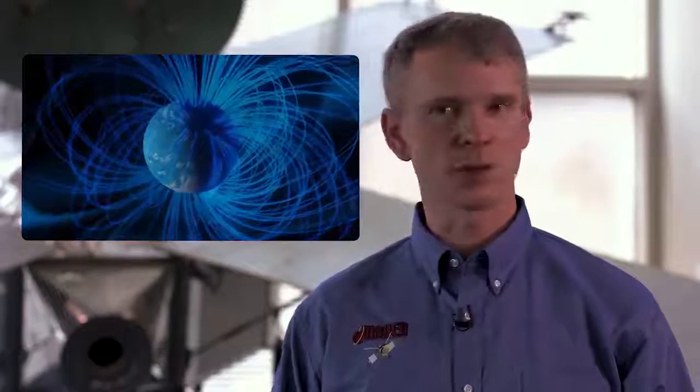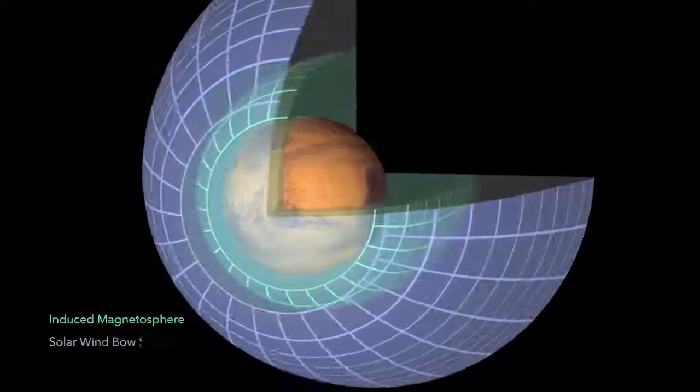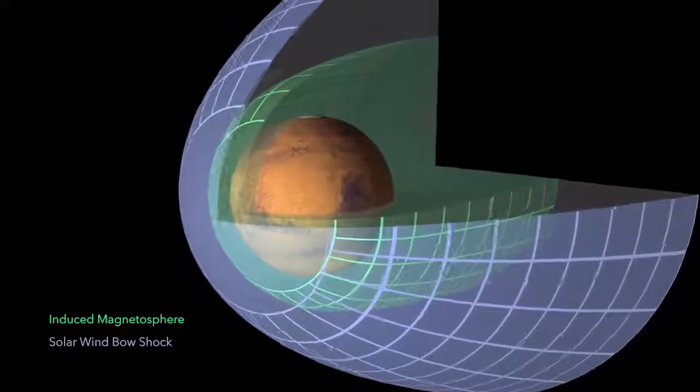Earth has a global dynamo magnetic field. Mars does not, but Mars has an induced magnetosphere. It has an induced magnetic field.